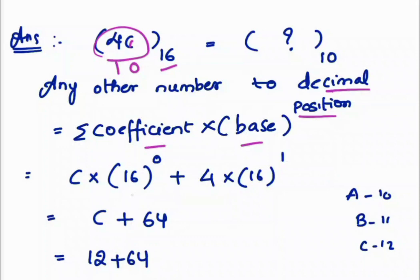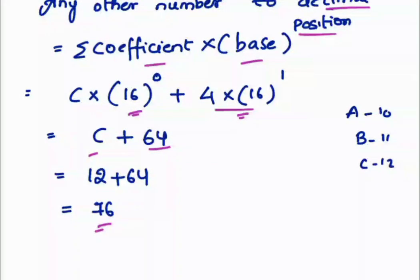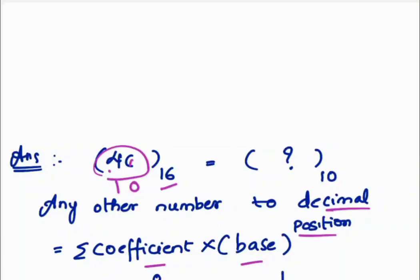It is like C × 16^0 + 4 × 16^1, which equals C + 64. This equals 12 + 64, which equals 76. So the decimal equivalent of hexadecimal number 4C is 76.